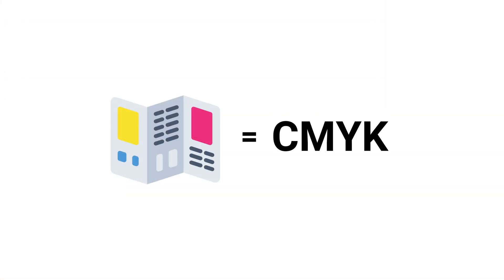Different color models exist for different purposes. If you are designing something that's going to be displayed on a digital screen, you want to use the color model that's optimized for that, which is RGB. Likewise, if you are designing something that's going to be displayed physically either on paper or some other printed material, you're going to want to use the color model that's optimized for that, which is CMYK.